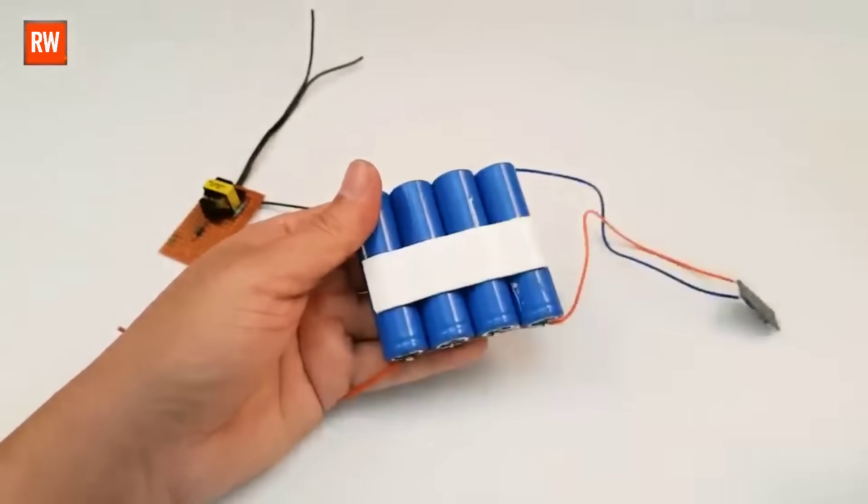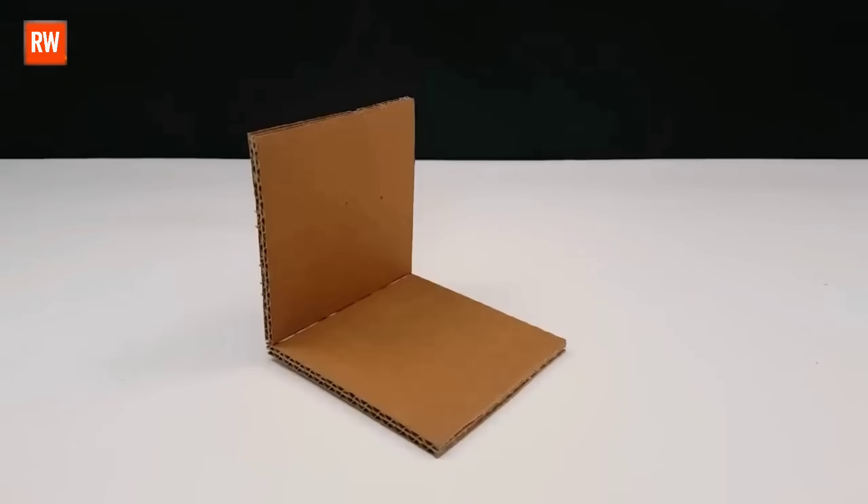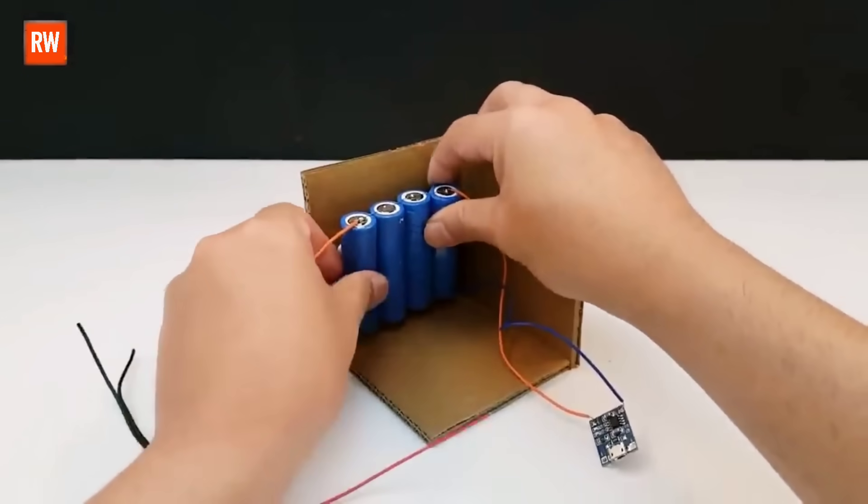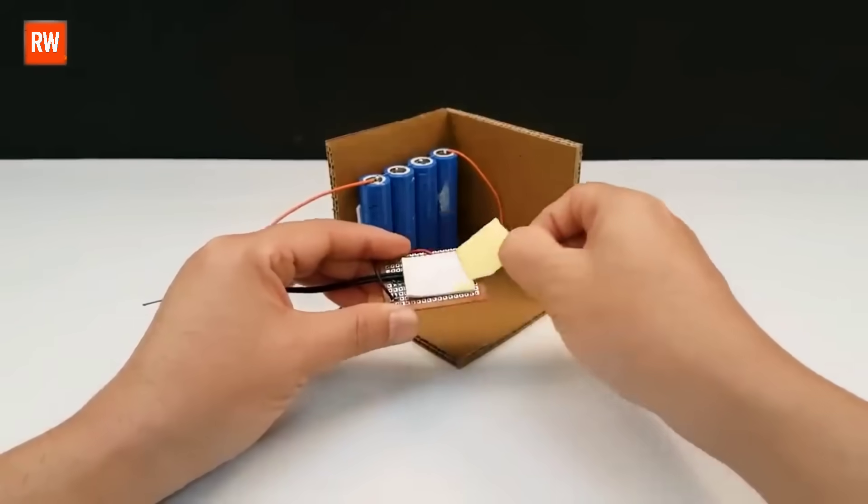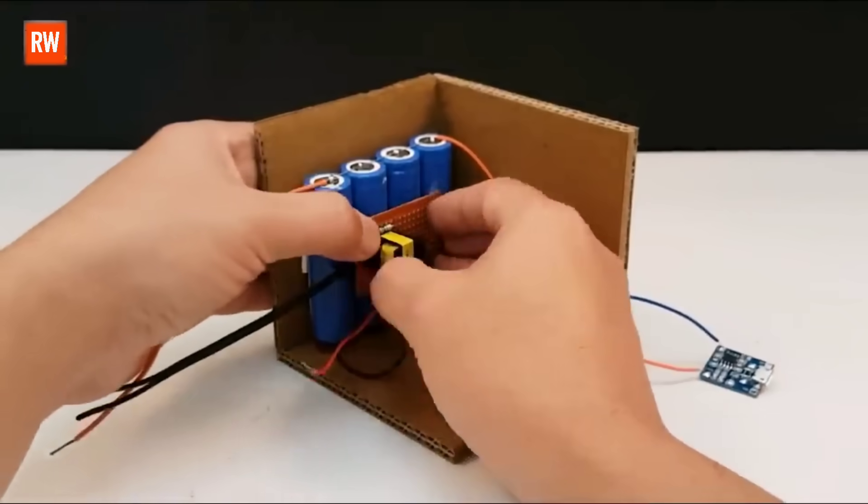Now that all our circuit connections are complete, it's time to carefully place and secure all the components inside the main body of the project. For the body, I've used a piece of sturdy cardboard, which is lightweight, easy to shape, and perfect for DIY builds like this one.